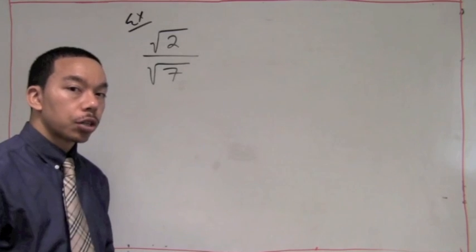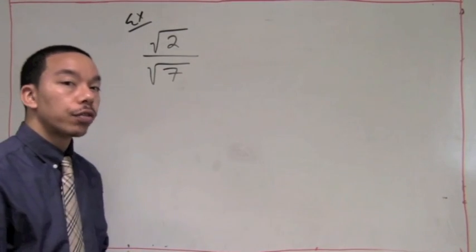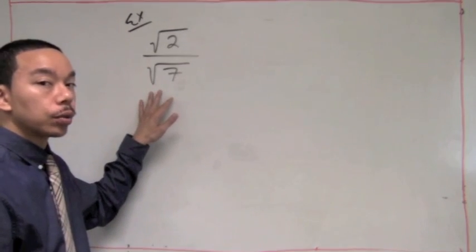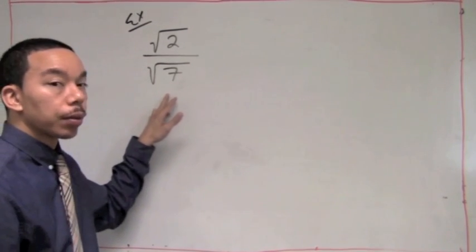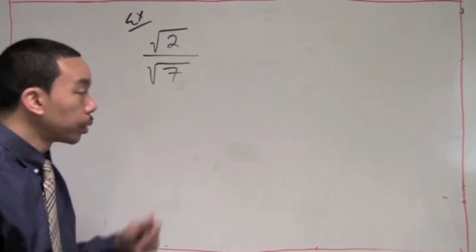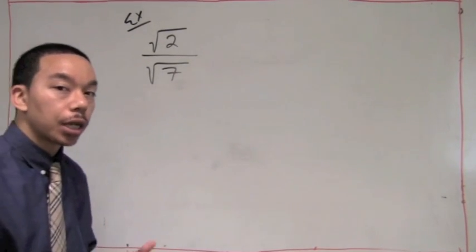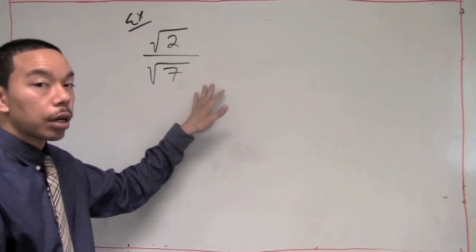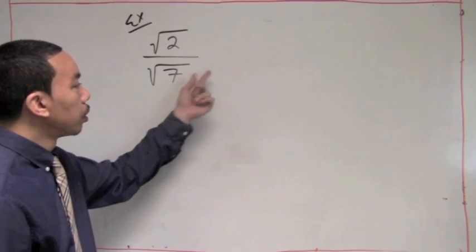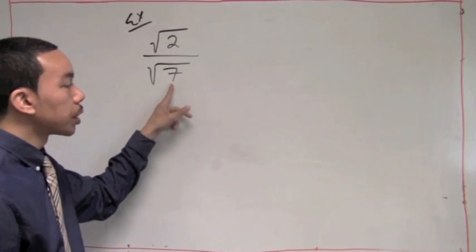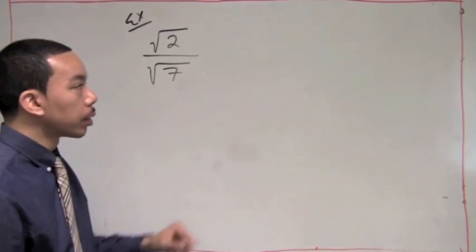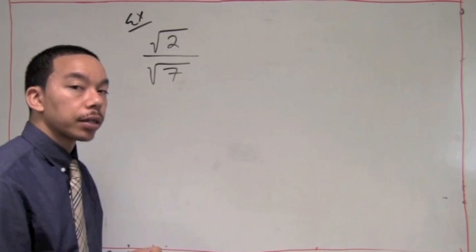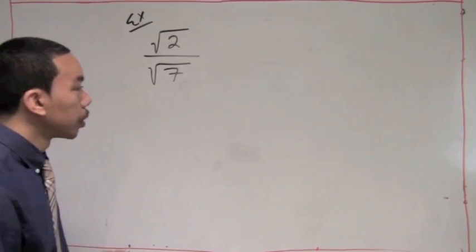We'll go back to what we originally started out with: the square root of 2 over the square root of 7. The radical square root of 7 in the denominator makes this fraction not simplified — we can't have that. So we want to rationalize the denominator. In rationalizing the denominator, we ask ourselves: what can we multiply, what other radical can we multiply the square root of 7 by to get a perfect square? Because if we get a perfect square, we can take the square root of it and it won't be a radical anymore.